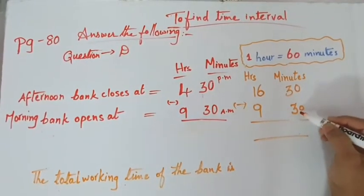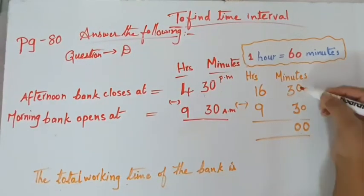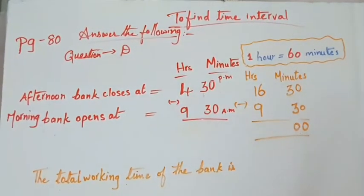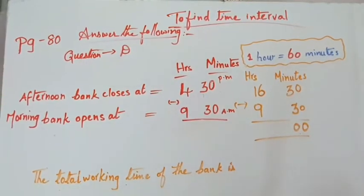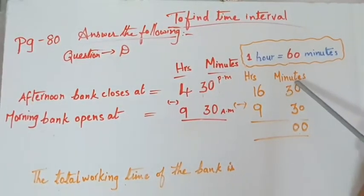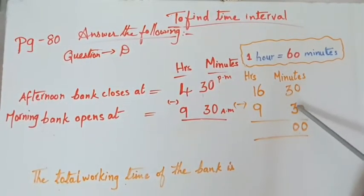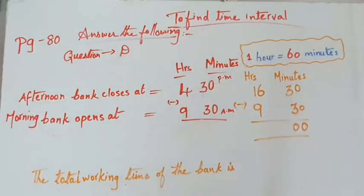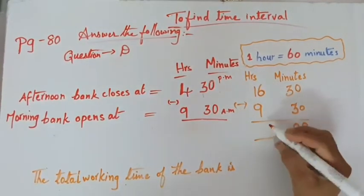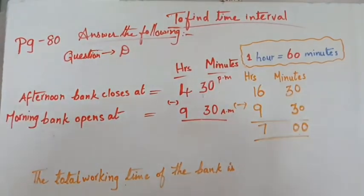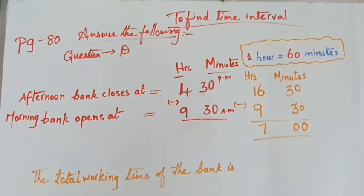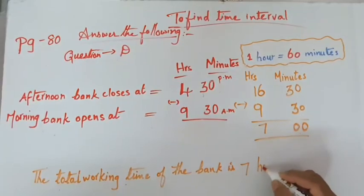So 30 minus 30, 3 minus 3, 0. And 0 minus 0, 0. So here we should not regroup. Why? Easily we can subtract our minutes, so no need to regroup here. So here we have to subtract 9 from 16, so it is 7. So now we know the answer. The total working time of the bank is 7 hours.